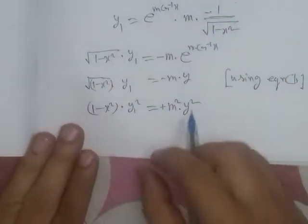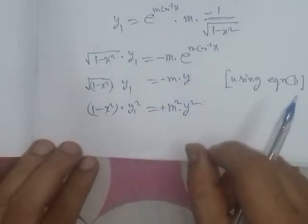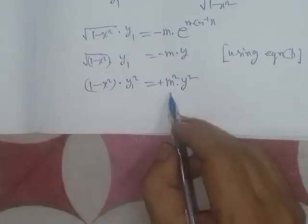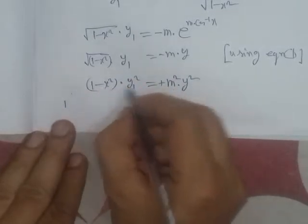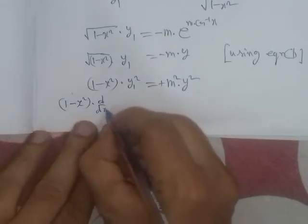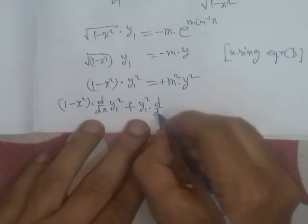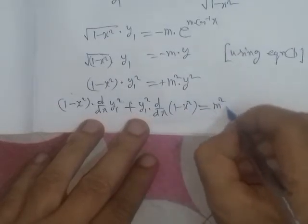We need (n+2)-th differentiation, so we first differentiate twice and then n times. We differentiate (1 - x²) · y₁² = m²y² once more with respect to x. The left side is a product of two functions, so we apply the product rule: first function as is times differentiation of second, plus second function as is times differentiation of first. So: (1 - x²) · d/dx(y₁²) + y₁² · d/dx(1 - x²) = m² · 2y · y₁.